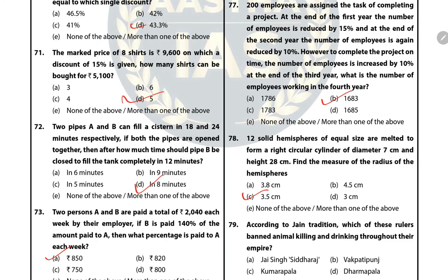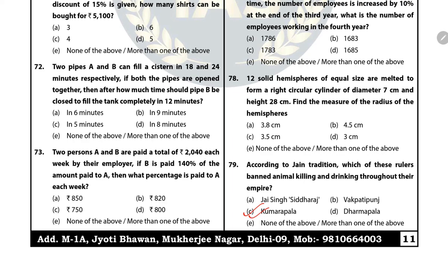Question 79: According to Jain tradition, which of these rulers banned animal killing and drinking throughout their empire? The answer is C — Kumarpal. Kumarpal was an important ruler of the Chalukya (Solanki) dynasty. Famous Jain Acharya Hemchandra initiated him to Jainism. According to Jain tradition, Kumarpal banned animal slaughter, drinking, and gambling in his entire empire.